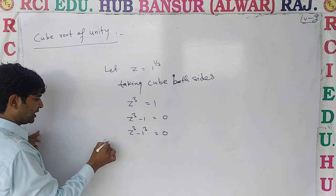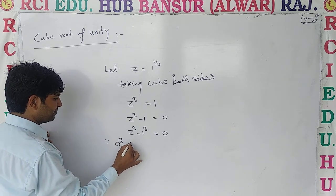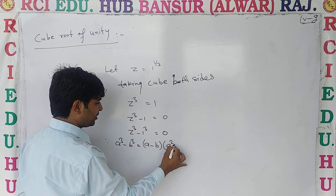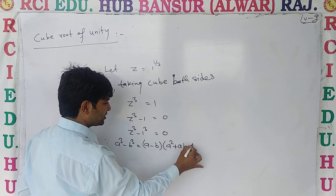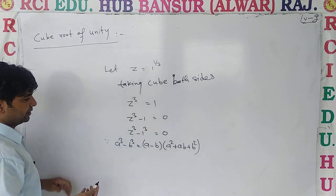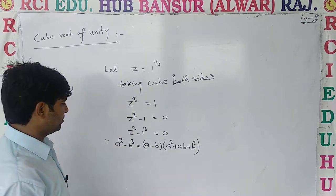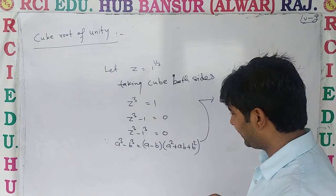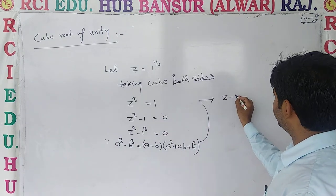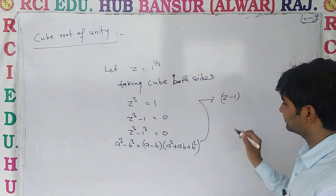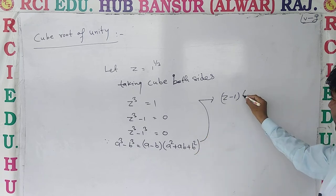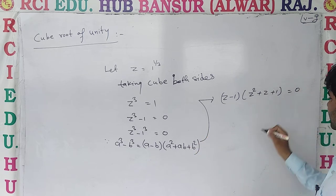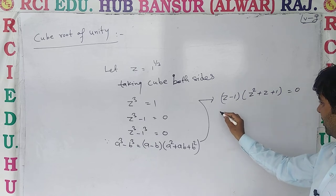Now you can see a cube minus b cube — what is it? It is (a minus b)(a square plus ab plus b square). Applying this identity here, we get z minus one, times z square plus z plus one equal to zero.